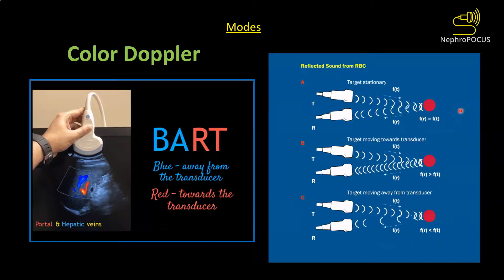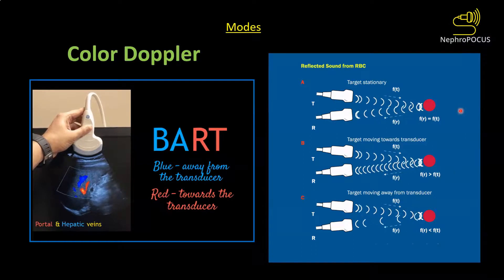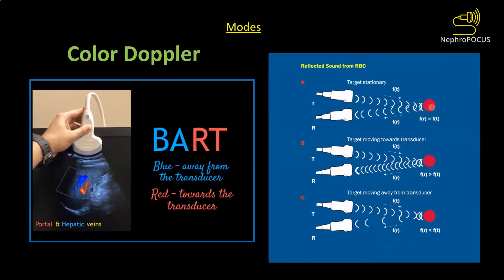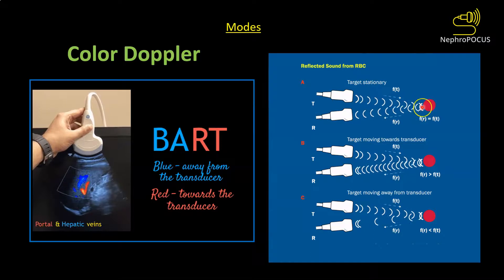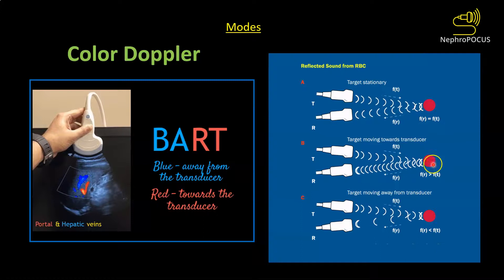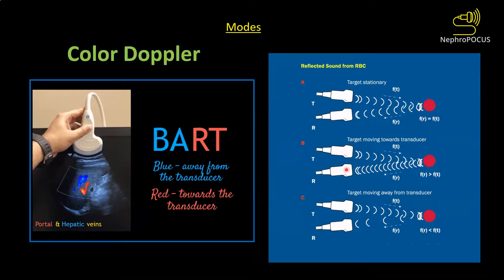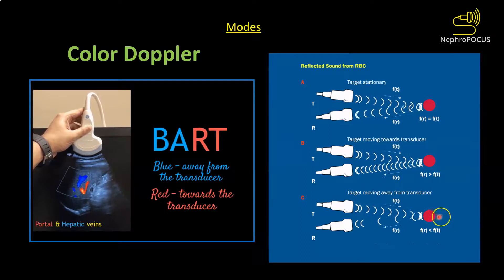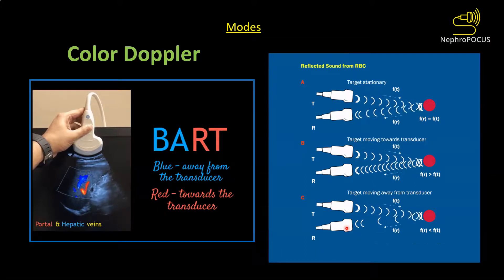Color Doppler uses the principle of frequency shift. When an RBC is stationary, the reflected frequency is nearly the same as the transmitted frequency and no color is displayed. If the RBC moves toward the transducer, the reflected frequency is higher than the transmitted frequency and it is represented in red. If the RBC moves away from the transducer, the reflected frequency is lower and it is shown as blue.